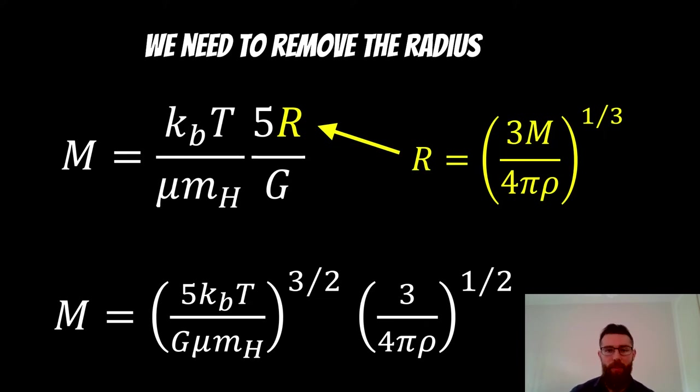But we need to basically remove it so it's only on one side instead. And when we do that, we get the expression at the bottom. So you need to do a couple of lines in order to get to that. But what we want is the mass on the left, and our Jeans mass is at the bottom.